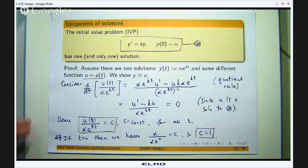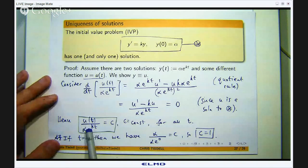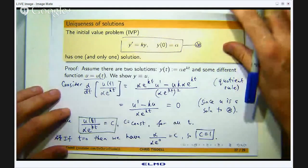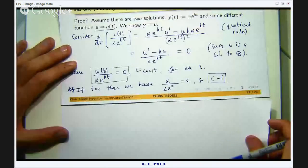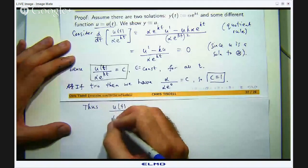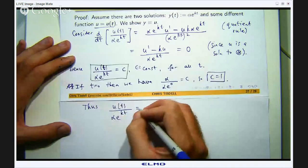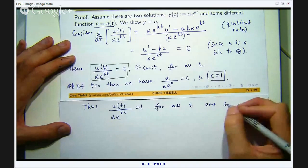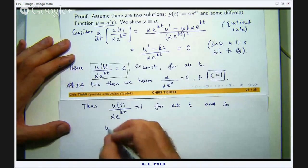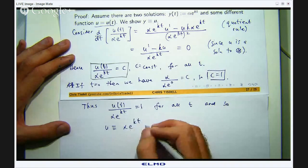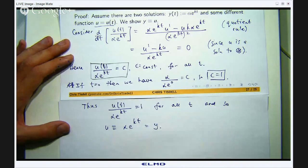So what do I know now about this quotient? It is identically equal to 1. Okay. And so what does it mean if I rearrange it? It means that u is identically equal to this, which is just y. Okay.